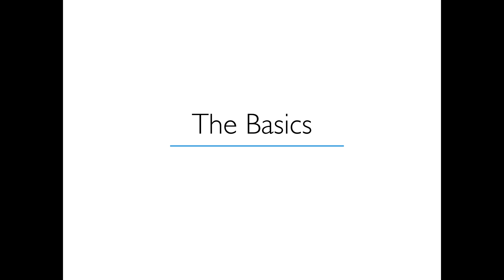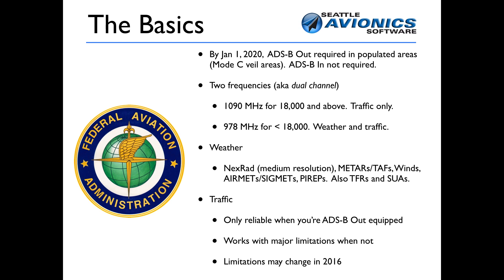ADS-B is a system that broadcasts information to the FAA, and in some cases receives information from them. By January 1st, 2020, ADS-B transmission — which is called ADS-B out — is required in most places in the country where you have population areas, essentially the same as mode C veil areas today.